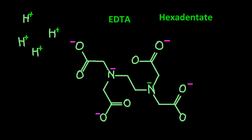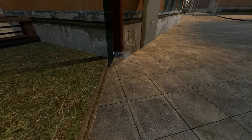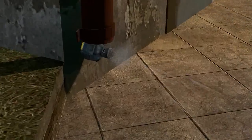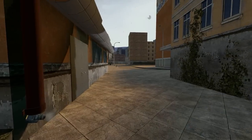This molecule will wrap around a central transition metal ion, and then you can remove it from the body — I think by dialysis or just excreting it out.